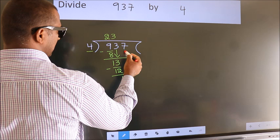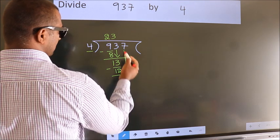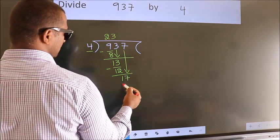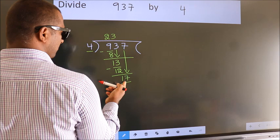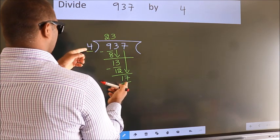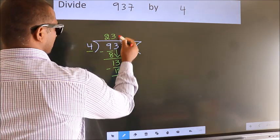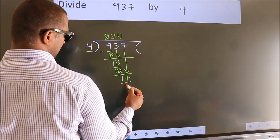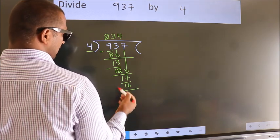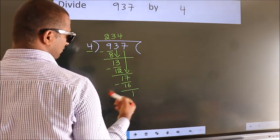After this, bring down the beside number. So, 7 down. So, 17. A number close to 17 in 4 table is 4 fours, 16. Now, we subtract. We get 1.